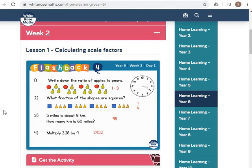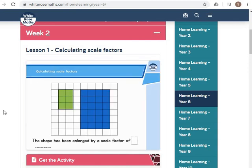Number four, multiply 3.28 by nine. For that one, you should have got 29.52. What about the time? Well, the time on the clock is 20 past three.